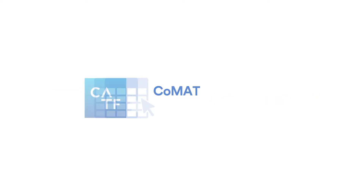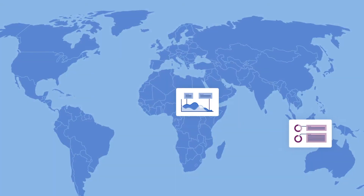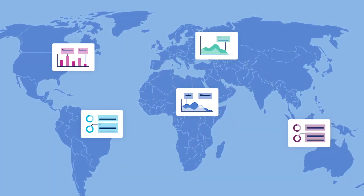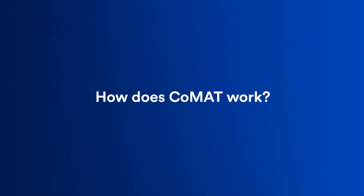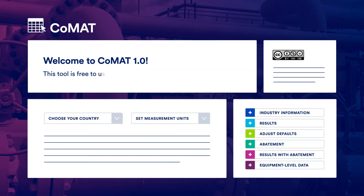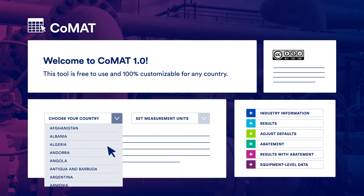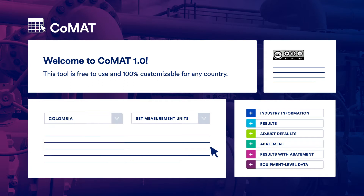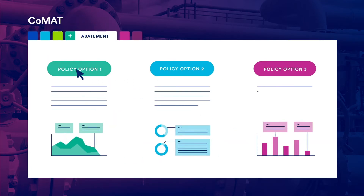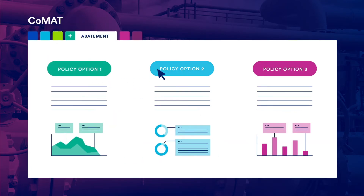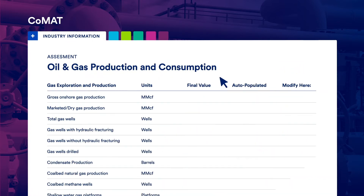At CATF, we've developed a new country methane abatement tool, making it easier for countries to develop their own estimates of methane emissions and reduction options. CO-MAT is free to use and 100% customizable for any country. Based on the best information available, this tool allows you to explore specific policy options to reduce emissions.